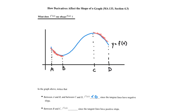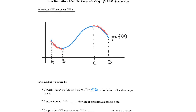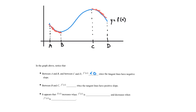Remember, we can associate the derivative of a function at a particular point with the slope of the tangent line at that point. So between B and C, the derivative is going to be greater than 0 — the derivative is positive since the tangent lines have positive slopes. Between B and C, the tangents to this curve all have positive slopes.